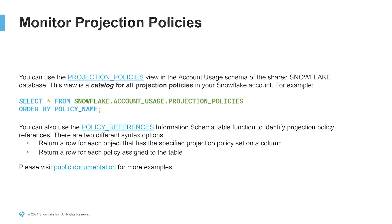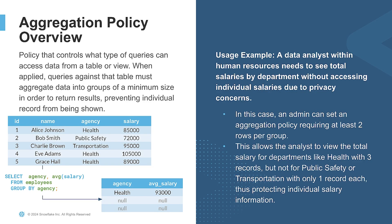Aggregation policies specify the minimum group size that will return results when a query runs an aggregation. This prevents what's called thin cell slicing through small cell suppression. An example is when an analyst looking at human resource data needs to see salaries by department without potentially revealing individual salaries. In this fake data, an aggregation policy requiring at least two rows per group would show the average salary for health, but not for public safety or transportation since that group is not large enough. Running the average salary by group would otherwise reveal individual salaries like Bob and Charlie's, since they're the only ones within their agency.